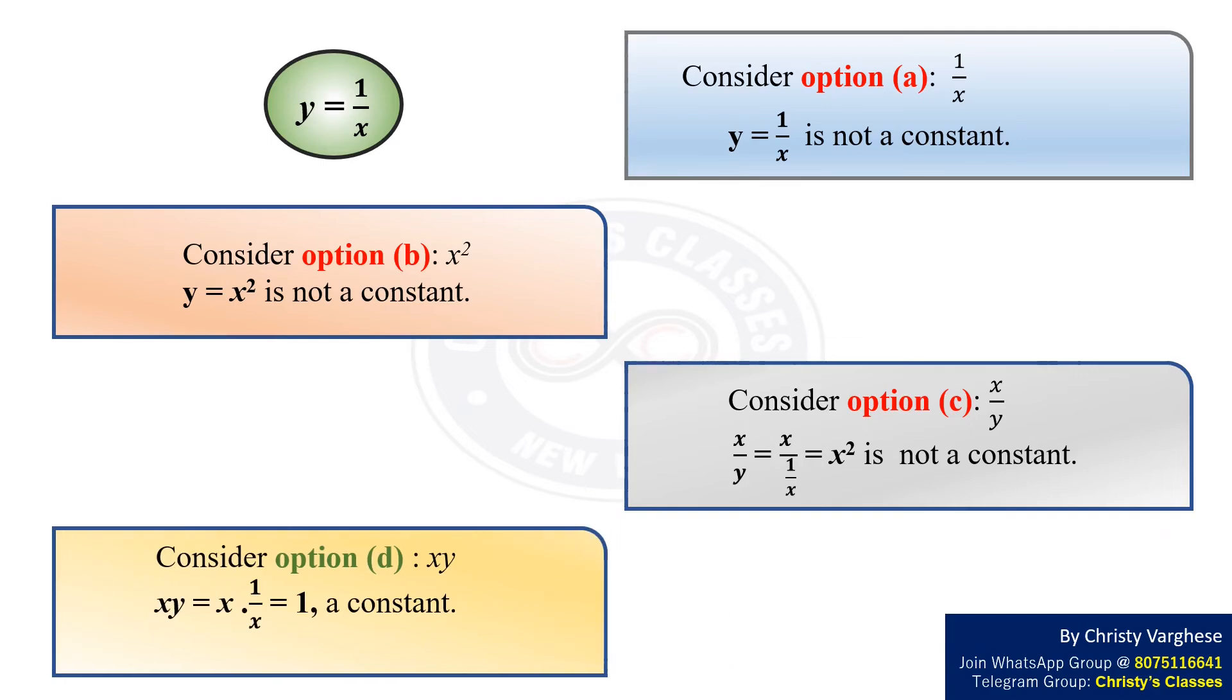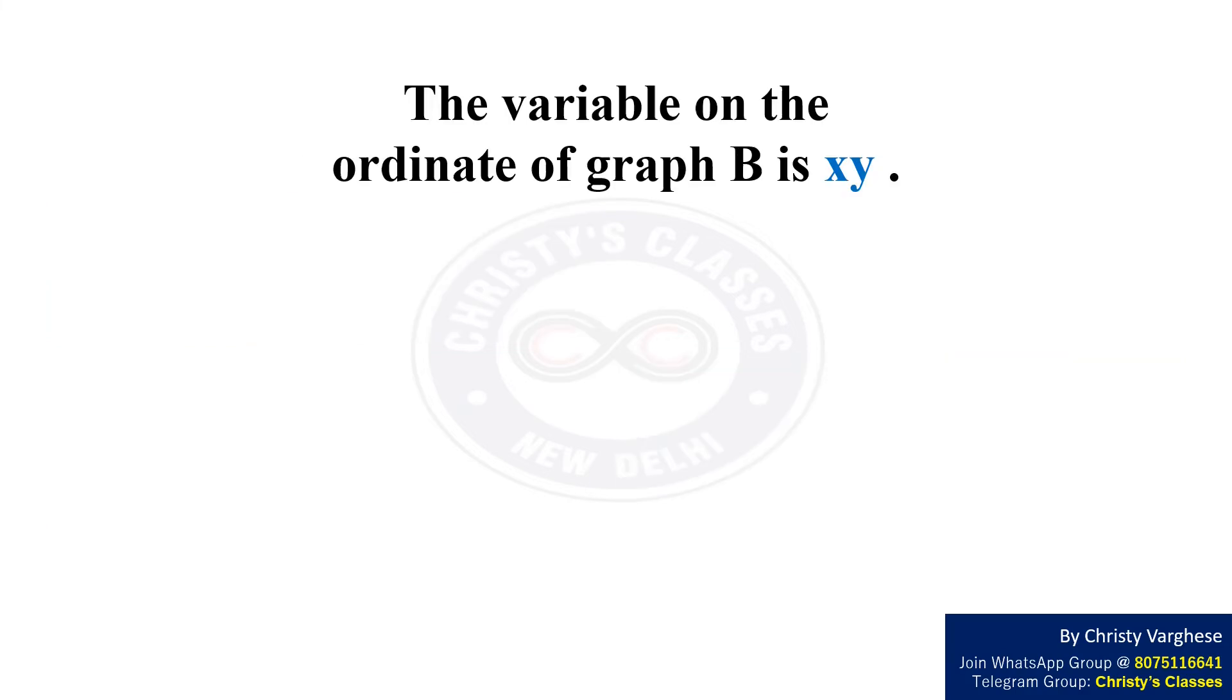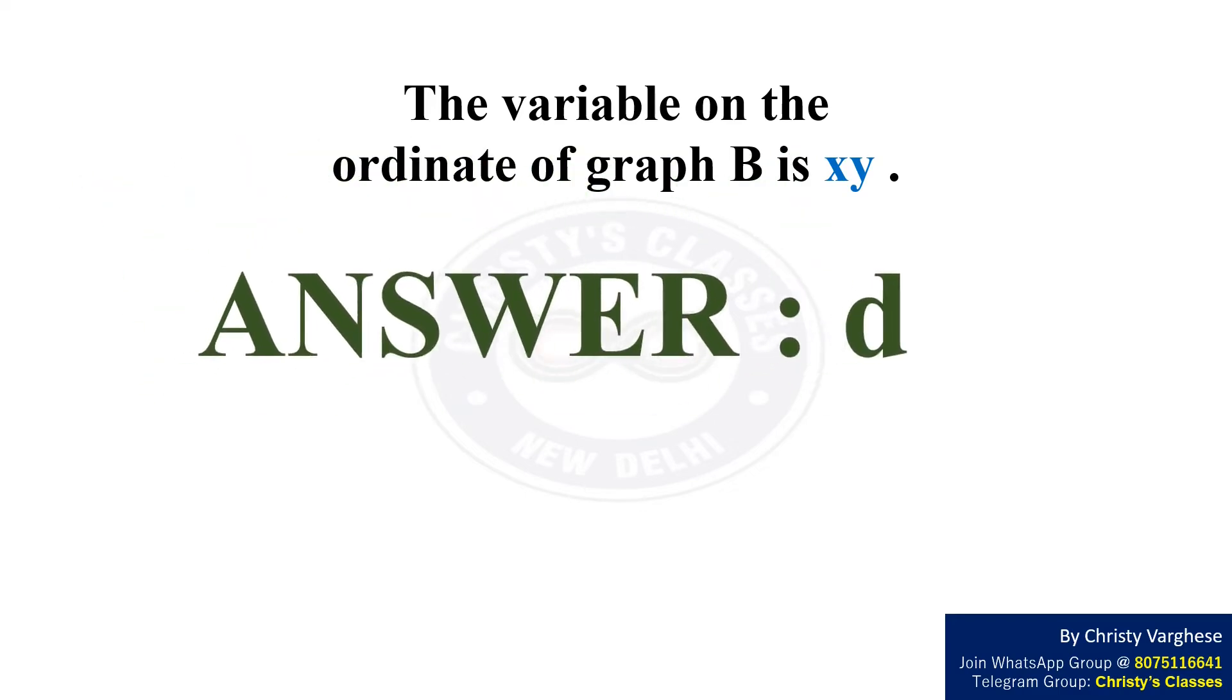In option D, the variable on the ordinate is xy. Substituting y equal to 1 by x, we get xy equal to 1, which is a constant. Therefore, the variable on the ordinate of graph B is xy. The right answer to the question is option D.